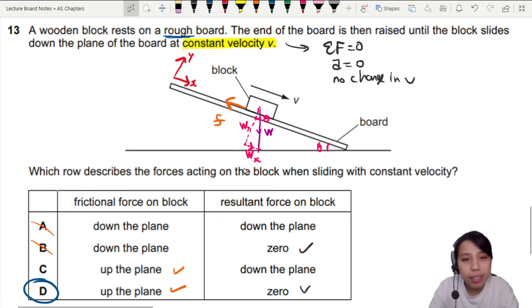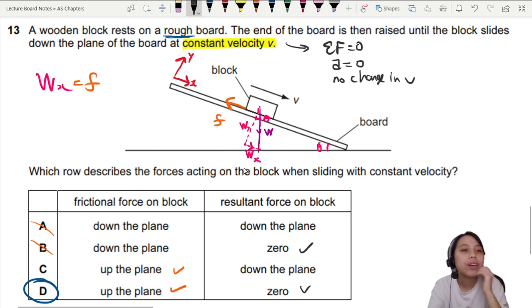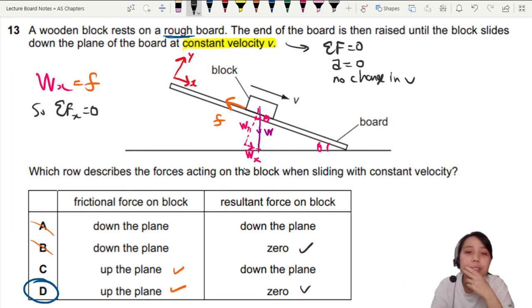w of x is the one that will cause the block to slide down in the first place. So if w of x equals to f, then there's no net force. So net force in the horizontal is zero. No resultant force.